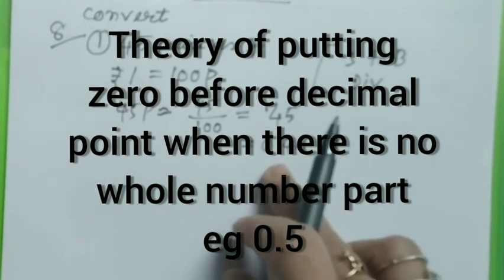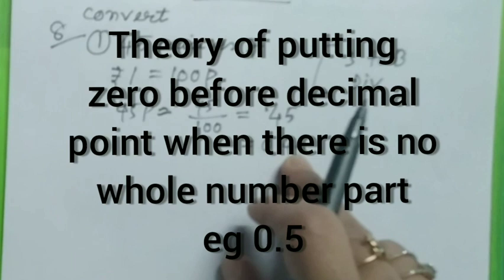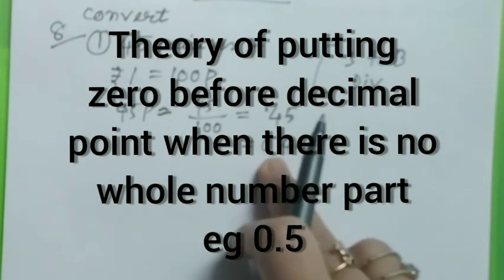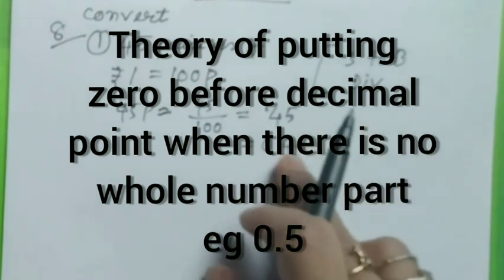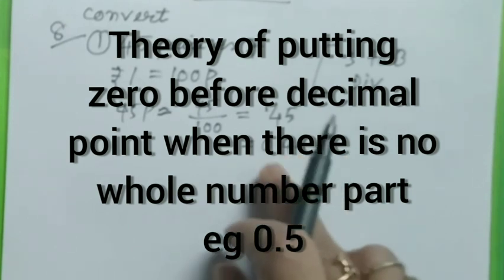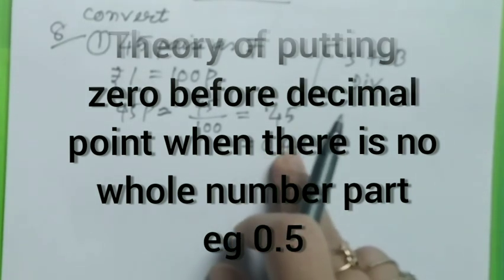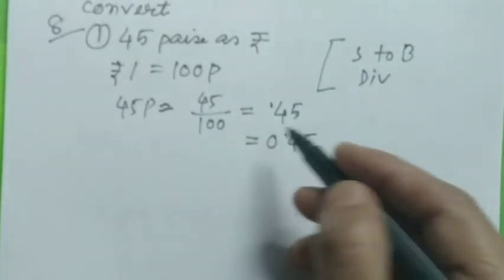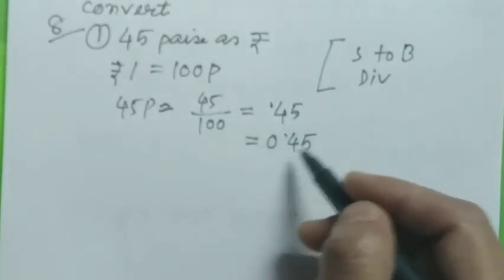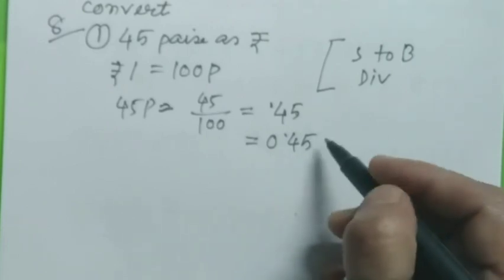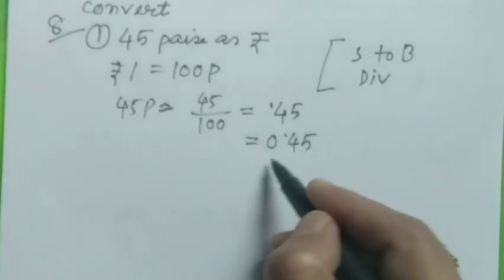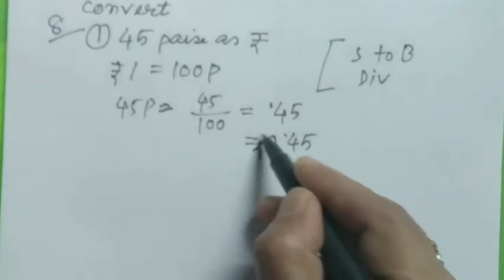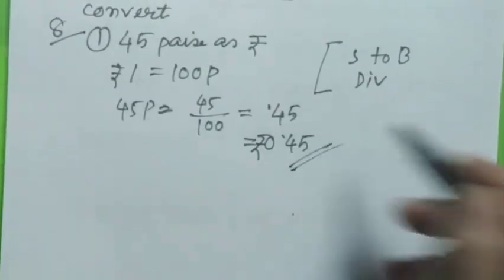Now here we usually write 0 if there is no whole number part. The reasoning behind putting this 0 - although it does not affect the value, it's almost universally considered good practice to include it, as sometimes it can be easy to miss the decimal point. The 0 makes it stand out. So our answer is 0.45 rupees.